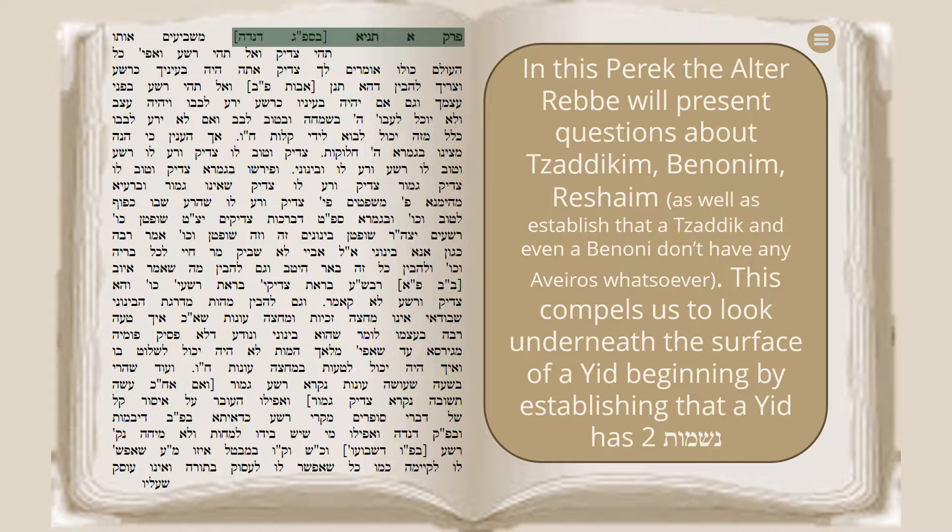All of this will be presented in this first Perak. Number one, the teachings and the questions on these teachings about Tzaddik, Benuni, and Rasha. Number two, establishing that when it comes to the way they conduct themselves in regards to Aveiros, a Tzaddik and even a Benuni are exactly the same. And number three, the beginning of looking underneath the surface — going beyond thought, speech, and action — beginning with establishing that every Yid has two Neshamas, then the Alta Rebbe will begin by talking specifically about the Nefesh HaBahamis.